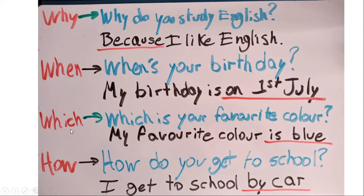'Which' is similar to 'what' — it is used to talk about things. For example: 'Which is your favorite color?' — My favorite color is blue. The difference between 'which' and 'what' is that 'which' is used when we have options, and 'what' is used when it is an open question.